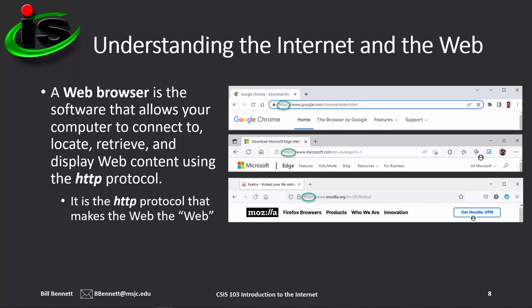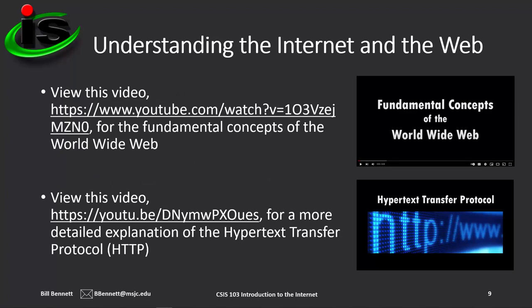If you look at the graphic on the right, you'll see three different web browsers — Chrome, Edge, and Firefox. Each one has a different web address typed in the address bar, but notice that they all begin with HTTPS. HTTPS is the secure version of HTTP. All web addresses will always begin with either HTTP or HTTPS. To get a deeper understanding of the World Wide Web and the Hypertext Transfer Protocol, I have a couple of links here for you of videos that explain those topics.